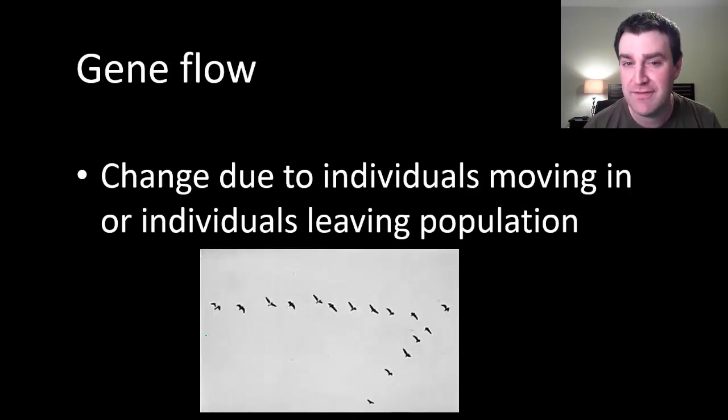Gene flow involves the gene pool changing over generations because new individuals of the same species come in and reproduce with current members, or current members leave and take their alleles with them. Alleles are either flowing in from new individuals coming in or they're flowing out because current individuals are leaving.